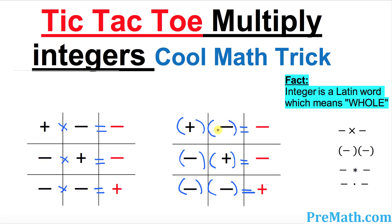Those are the very simple and crucial building blocks when it comes to integers. Here are a few notations you could encounter when it comes to multiplication: sometimes a cross, sometimes parentheses, sometimes an asterisk, or sometimes a dot. By the way, that dot is not a decimal — just keep that in mind.